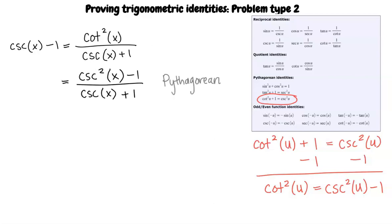And we can write cotangent squared of u equals cosecant squared of u minus 1. Now we can substitute cosecant squared of x minus 1 for cotangent squared of x in the numerator. We write Pythagorean because we used a Pythagorean identity to simplify the equation.